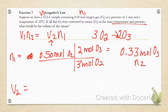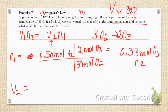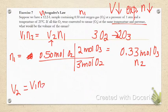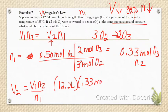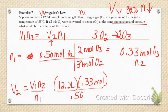So V2 is going to be equal to—our volume went down so we expect our moles to also go down. So V1N2 over N1: we have 12.2 liters times 0.33 moles over 0.5 moles.